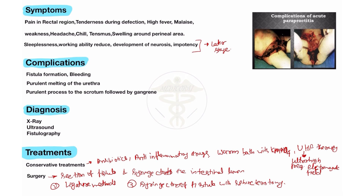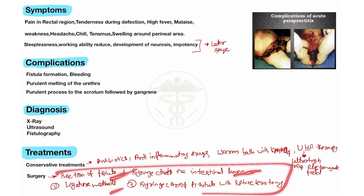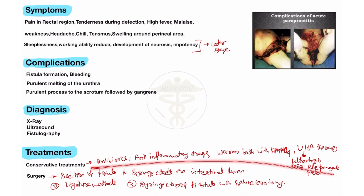Based on whether the complication is acute, chronic, or recurrent, different types of surgery are performed. Conservative methods include antibiotics, anti-inflammatory drugs, warm bath with KMnO₄, and UHF therapy. Surgical methods include resection of fistula with syringectomy, ligature method, and syringectomy of fistula with sphincterotomy. This is all about Paraproctitis, thank you.